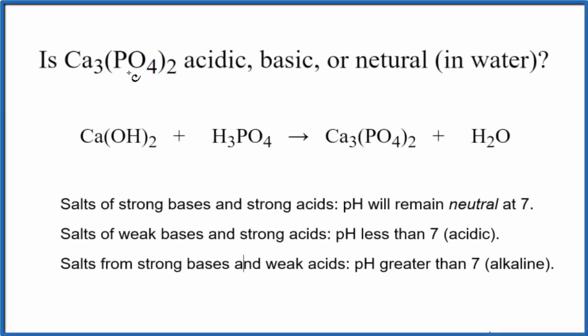To determine whether Ca₃(PO₄)₂ is acidic, basic, or neutral in water, we'll use these rules here. This is calcium phosphate. So the first thing we need to do is figure out what neutralization reaction produced the calcium phosphate.